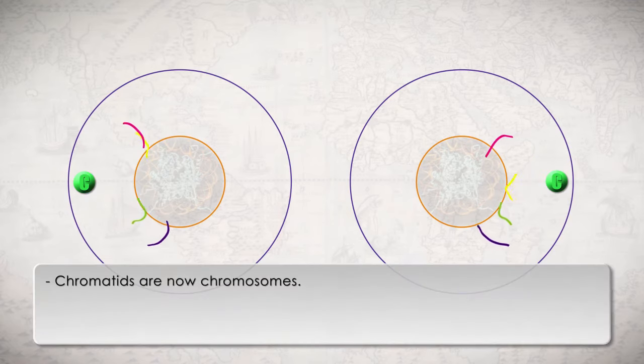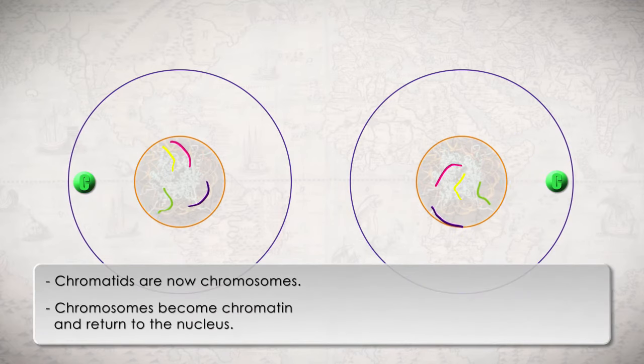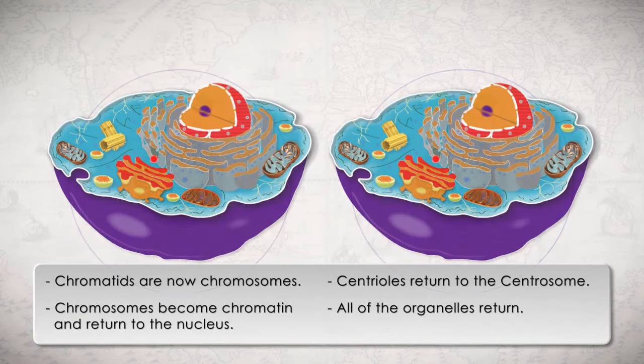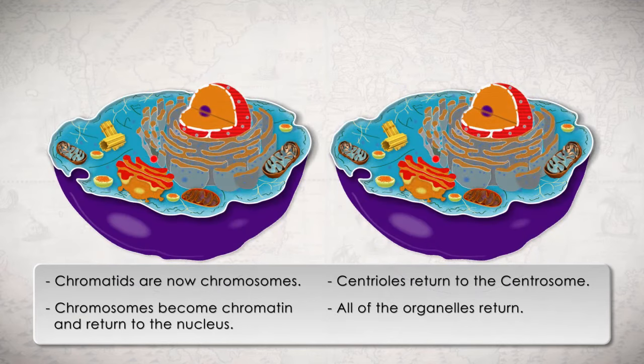The chromatids are now chromosomes. The chromosomes become chromatin, and return to the nucleus. The centrioles return to the centrosome, and all of the organelles that have temporarily disappeared now return.